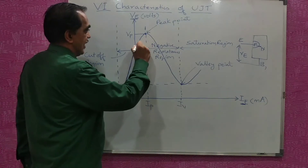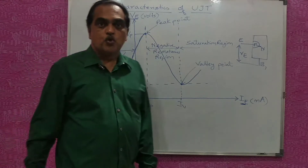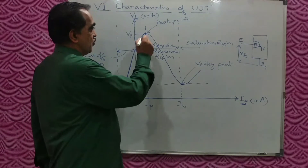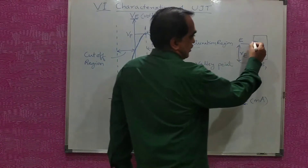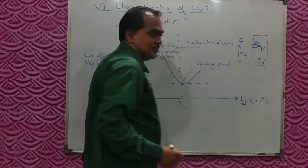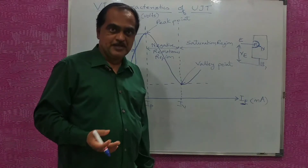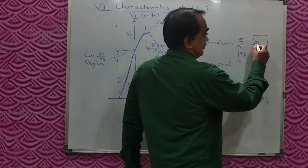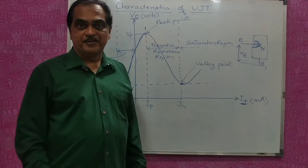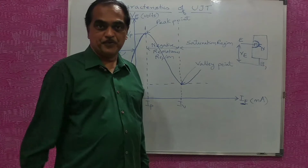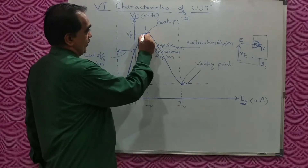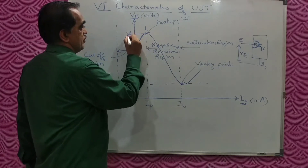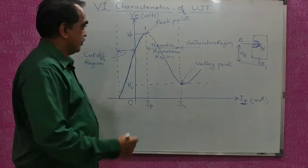As you increase the voltage, it will reach a specific point called the peak voltage. Once the emitter voltage reaches the peak voltage, the depletion layer between the P and N junction will be overcome, and all the voltages opposing the emitter voltage will be overcome, and the UJT will start conducting. That point where the applied voltage reaches this level is called peak voltage, Vp.